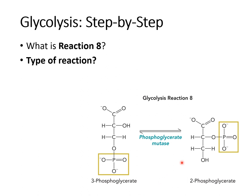Reaction 8 is phosphoglycerate mutase. This is a phosphoryl shift — similar to isomerization reactions, you shift part of the molecule to another position. Here the phosphoryl group is moved to another carbon. While we're not making ATP or NADH in this step, moving the arrangement of atoms gives the molecule new functions and new abilities to interact, allowing it to proceed into the next reaction.